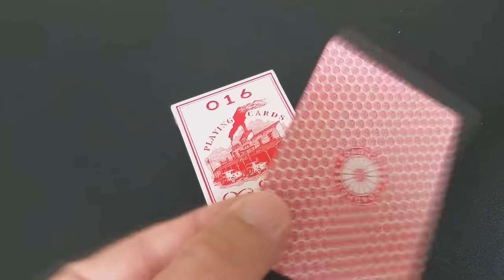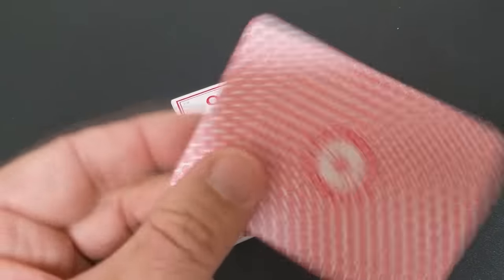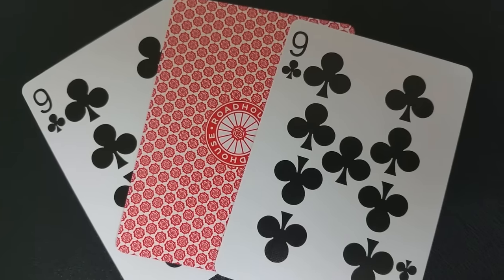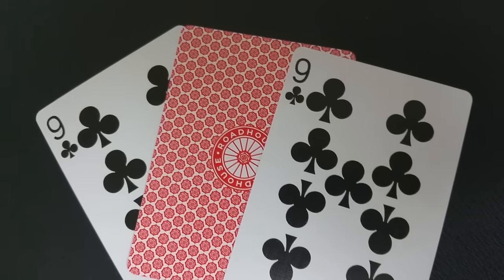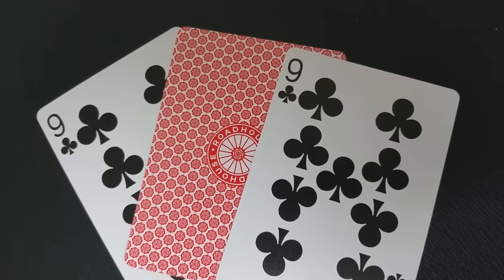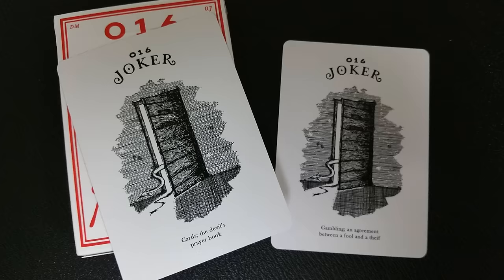With this deck, you're going to get a couple of extras, the first of which is a double backer, which is great for magic tricks. And as your gaff card, you're actually going to get an extra card. So you're going to get an extra nine of clubs, which is great for magic tricks as well.